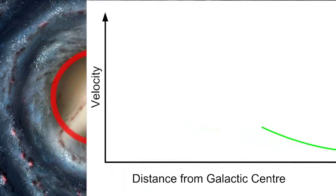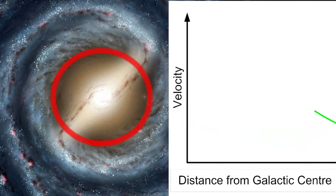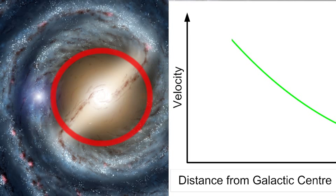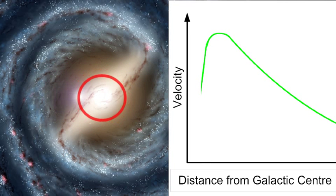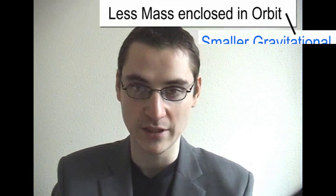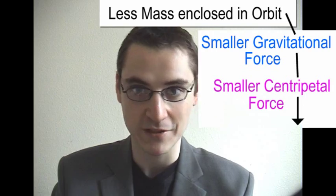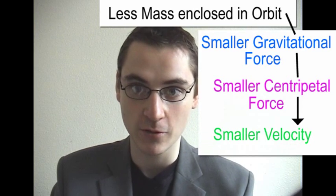However, it's slightly different as we get towards the center, because as we get close to the center, the orbit of an orbiting star will enclose less and less mass. So essentially, as we get close to the center, the mass of the central object becomes less and less, and so the gravitational pull towards the center will actually be less and less. Hence the centripetal force and the velocity of the star also will have to be less. So the rotation curves we predict for a spiral galaxy would look more or less like this.